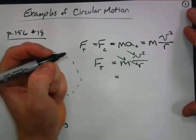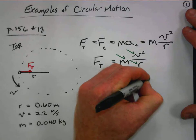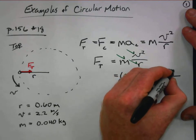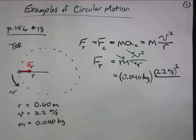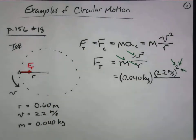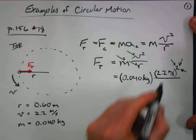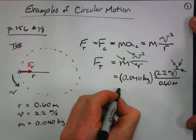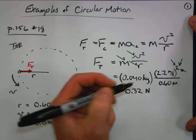All I have to do is plug in and calculate. The mass is 0.040 kilograms, the speed is 2.2 meters per second — and it's very important to remember that the speed is squared. Do not lose track of your exponents. The radius is 0.60 meters. When I perform this calculation, I get an answer of 0.32 newtons.